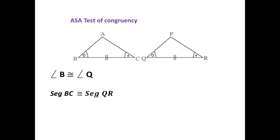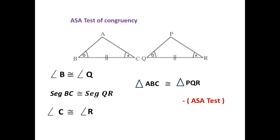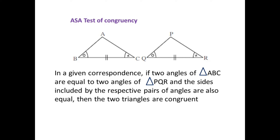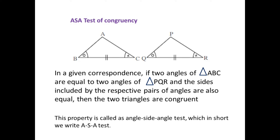The side between these angles, segment BC, is congruent to segment QR. There are two angles given and the included side is congruent with the corresponding two angles and their included side. Therefore triangle ABC is congruent to triangle PQR by the ASA test. We can define this test as: if two angles of triangle ABC equal two angles of triangle PQR and the sides included by the respective pairs of angles are also equal, then the two triangles are congruent by the Angle Side Angle test.